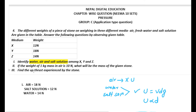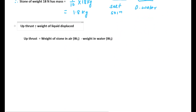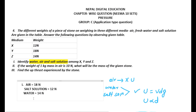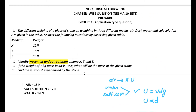Next, find the upthrust experienced by the stone. We know that upthrust = weight of liquid displaced = W1 − W2, that is weight in air minus weight in water. Weight in air is 18 newton and weight in water is 14 newton. So upthrust = 18 − 14 = 4 newton. This is the required upthrust experienced by the stone.